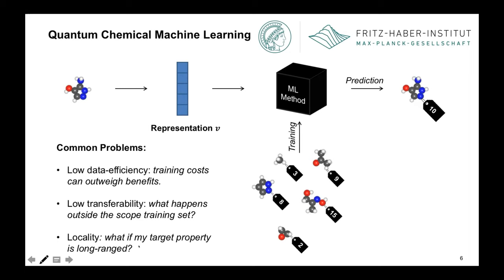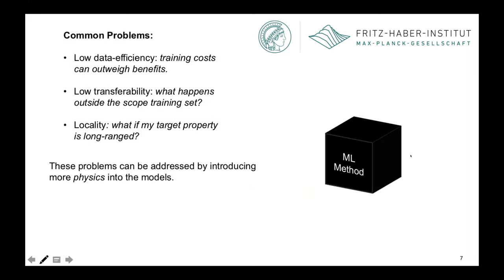The third thing is related to locality. What if my target property — for example, an energy in a polar molecule — has a very significant contribution from long range, such as electrostatic interactions or dispersion, which can also be quite long range? My local representation by definition will miss these contributions. The rest of my talk will focus on strategies to deal with these problems.